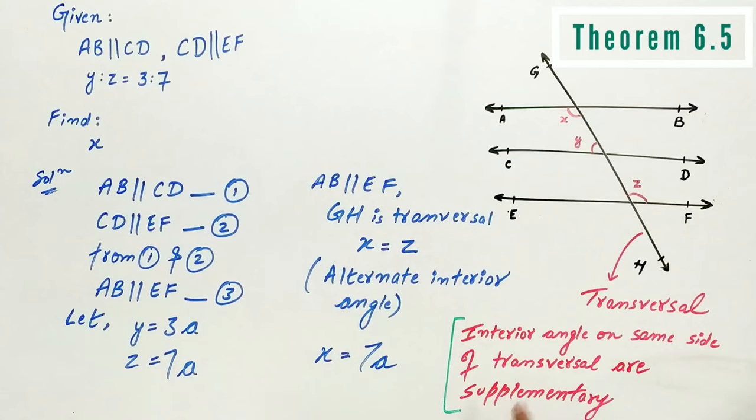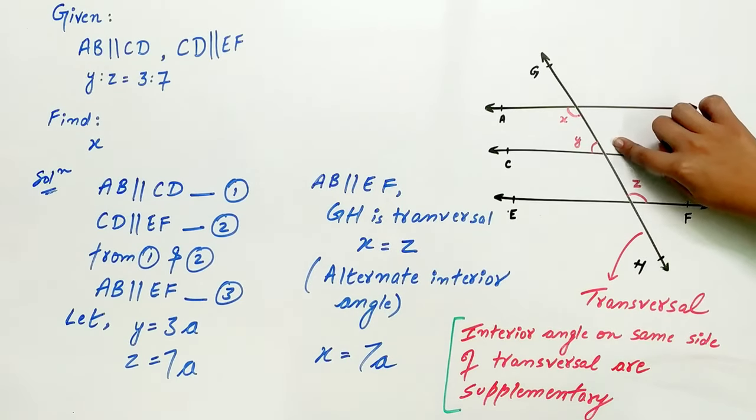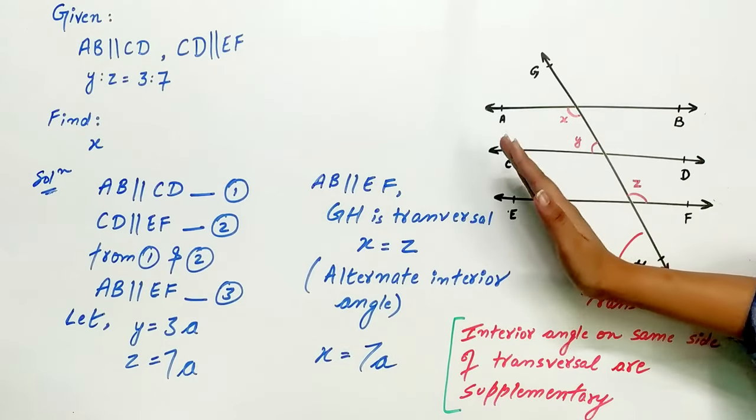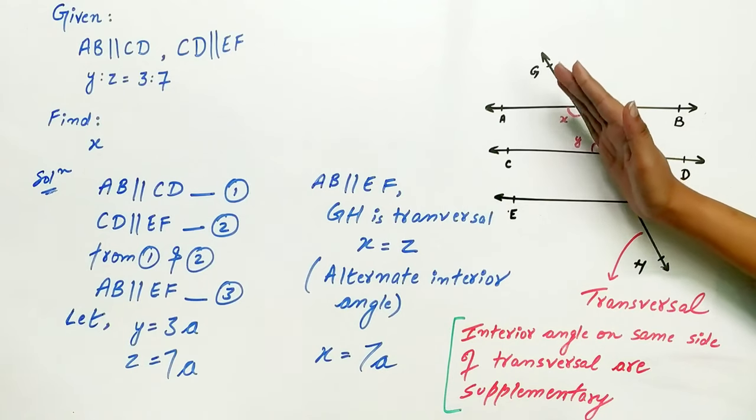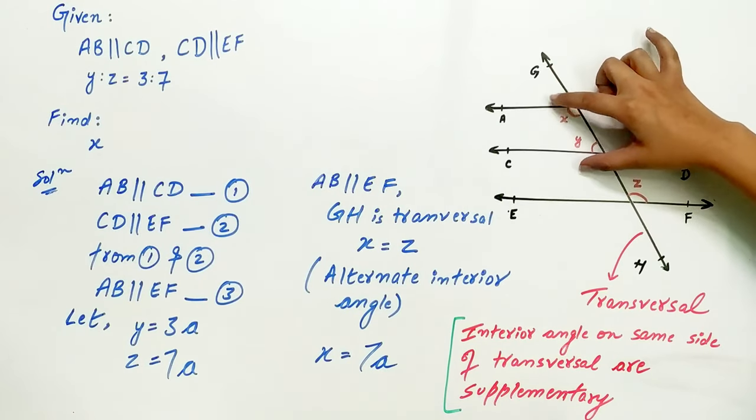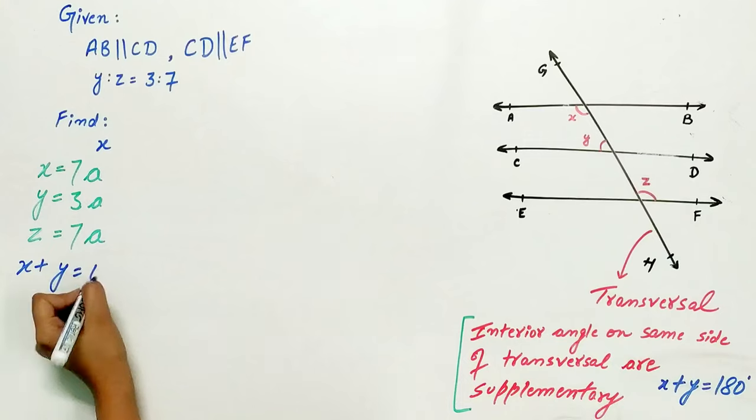Now, remember the identity: interior angles on the same side of a transversal are supplementary. In this case, interior angles are X and Y. They are on the same side of the transversal GH. Hence, they are supplementary angles. That means X plus Y is 180 degrees.